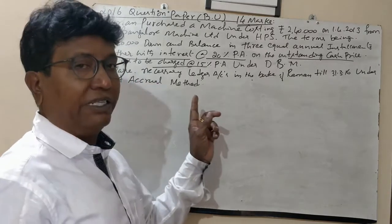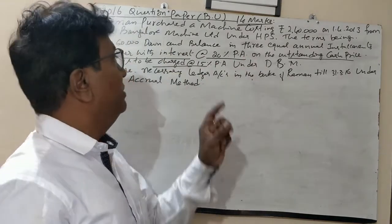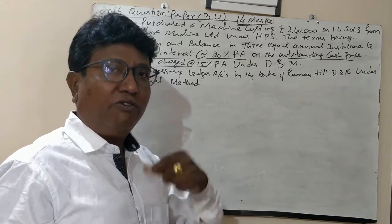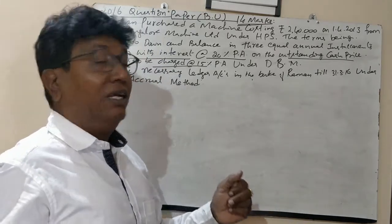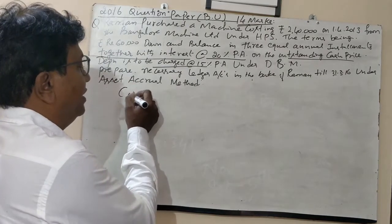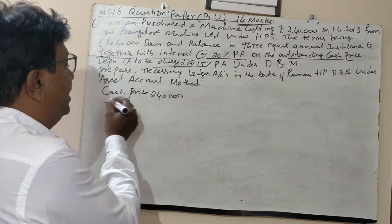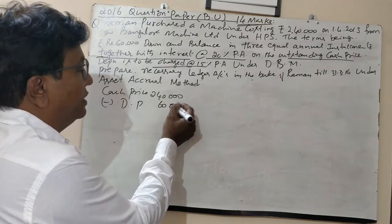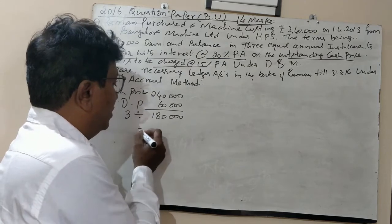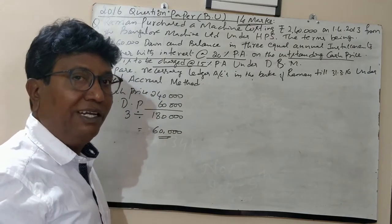The terms and conditions are: ₹60,000 as a down payment, and the balance in three equal annual installments. Out of ₹2,40,000, after the ₹60,000 down payment, the remaining balance is ₹1,80,000. Dividing this into three equal installments gives ₹60,000 each, and interest is not included in this ₹60,000 installment amount.